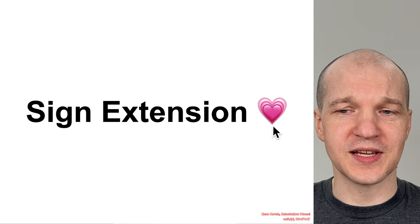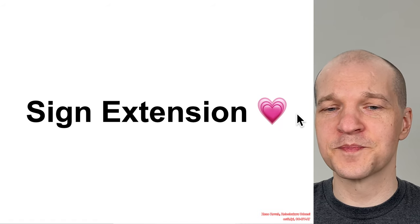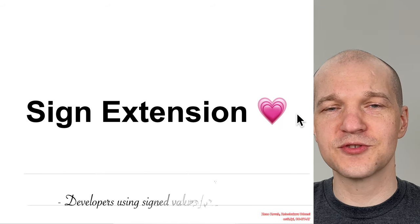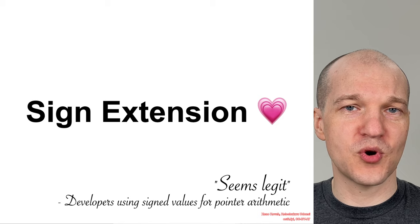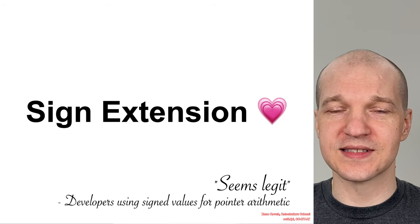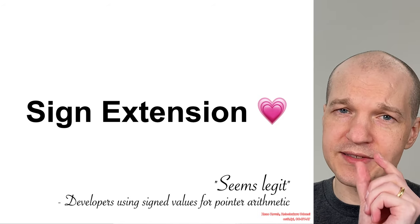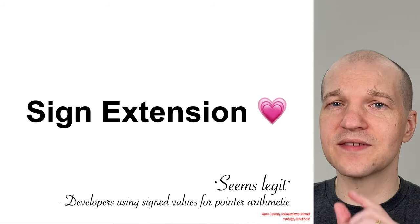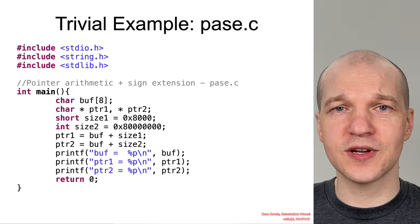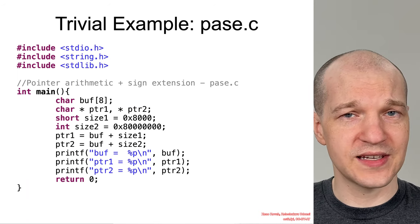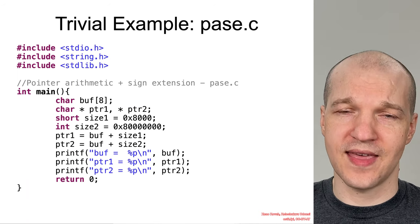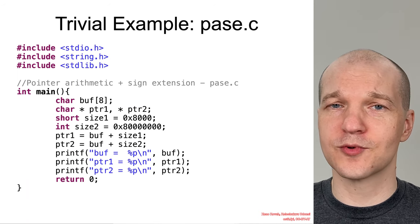Sign extension — and this is a heart getting bigger, not smaller. Sign extension describes situations where, for instance, you're doing pointer arithmetic on signed values. Those small 16-bit signed values that you don't worry about can all of a sudden become big 64-bit negative values that you absolutely should worry about.